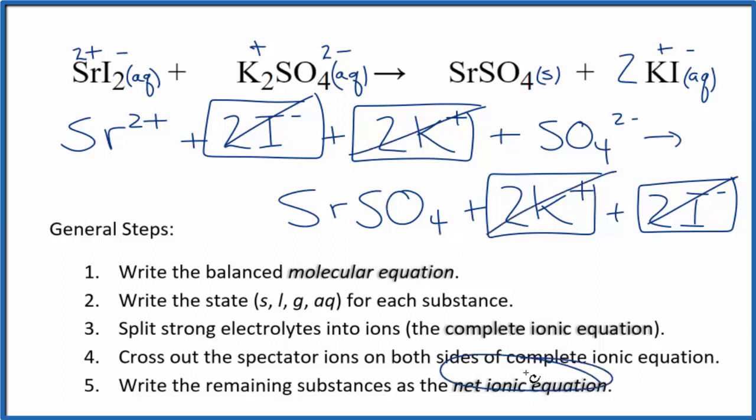What's left, that's the net ionic equation here for SrI2 plus K2SO4. I'll clean this up and write the states. We'll have our net ionic equation.